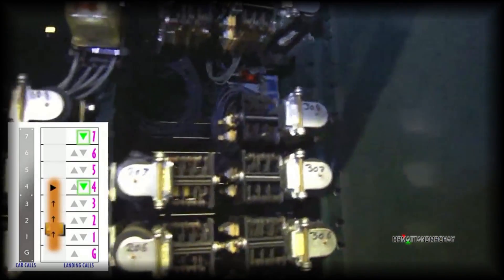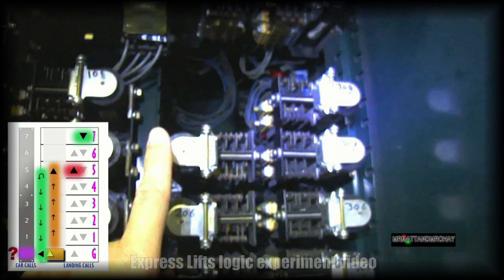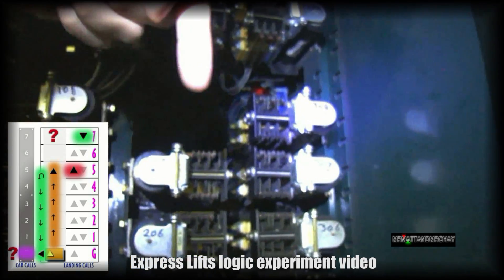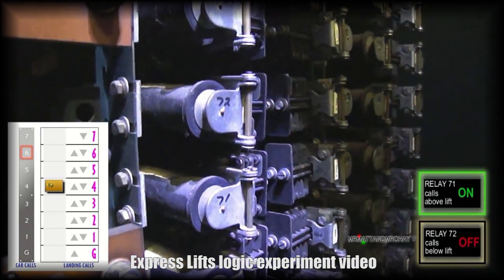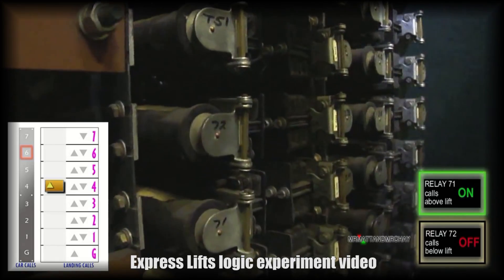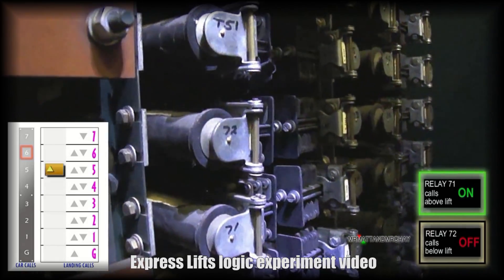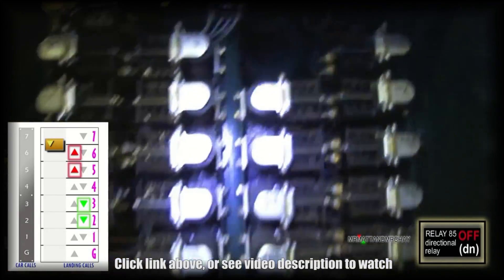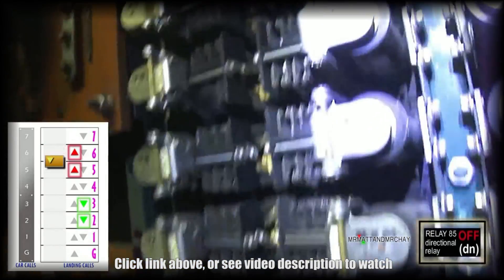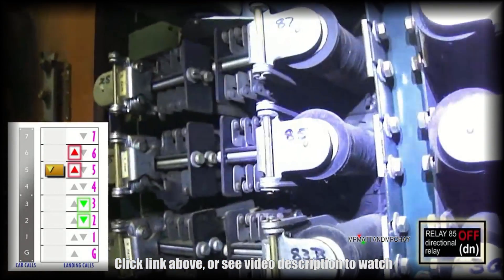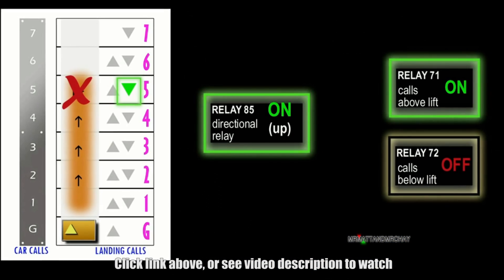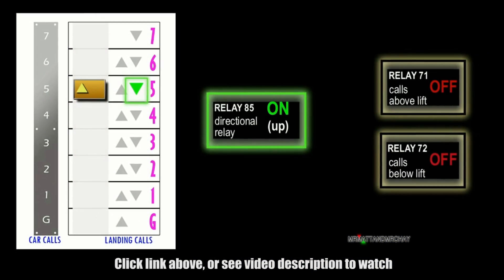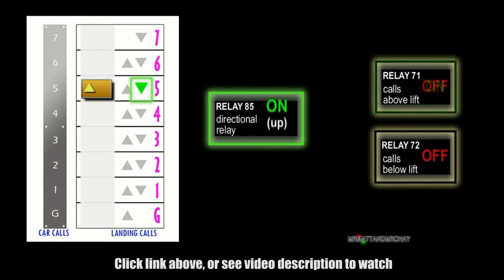I have many videos explaining old lift logic, including this one where I perform loads of relay logic experiments. Will it continue up to get the top floor and then come back down? Give it a call. First floor. Yep. Give it a couple of up calls. That one and that one. Directional relay. It's pretty basic relay logic. No destinations, just keep going until the relevant relay turns off.